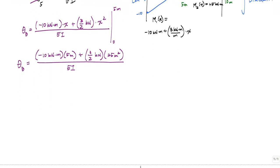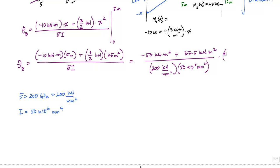E is equal to 200 GPa, which is the same as 200 kilonewton per millimeter squared. And I was 50 times 10 to the 6 millimeters to the 4th. So if we substitute numbers in here, I'm going to convert all these meters squared into millimeters squared, which means I'm going to multiply by the ratio of 10 to the 6 millimeters squared equals 1 meters squared. And you notice here that the units are going to cancel out. Kilonewtons cancel, meters squared cancel, millimeter squared cancels, and it's going to be dimensionless.